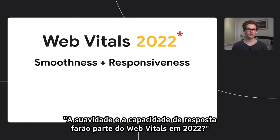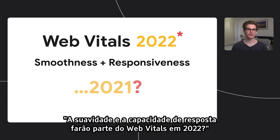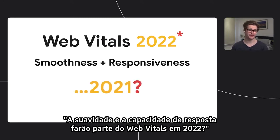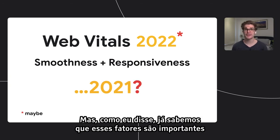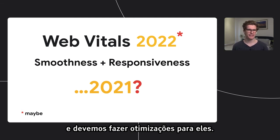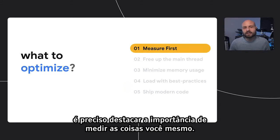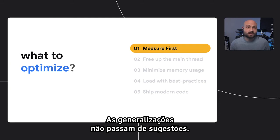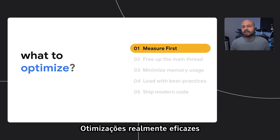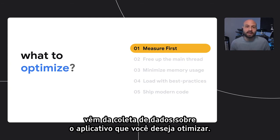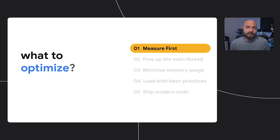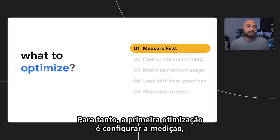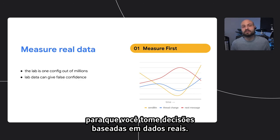Will smoothness and responsiveness be part of Web Vitals in 2022? The answer is maybe. But we already know that these factors are important and we should be optimizing for them. So how and what do we even optimize? It's impossible to overstate the importance of measuring things yourself — generalizations are suggestions at best. Real effective optimizations come from gathering data about your application. The first optimization is to set up measurement so you can make decisions informed by real data.